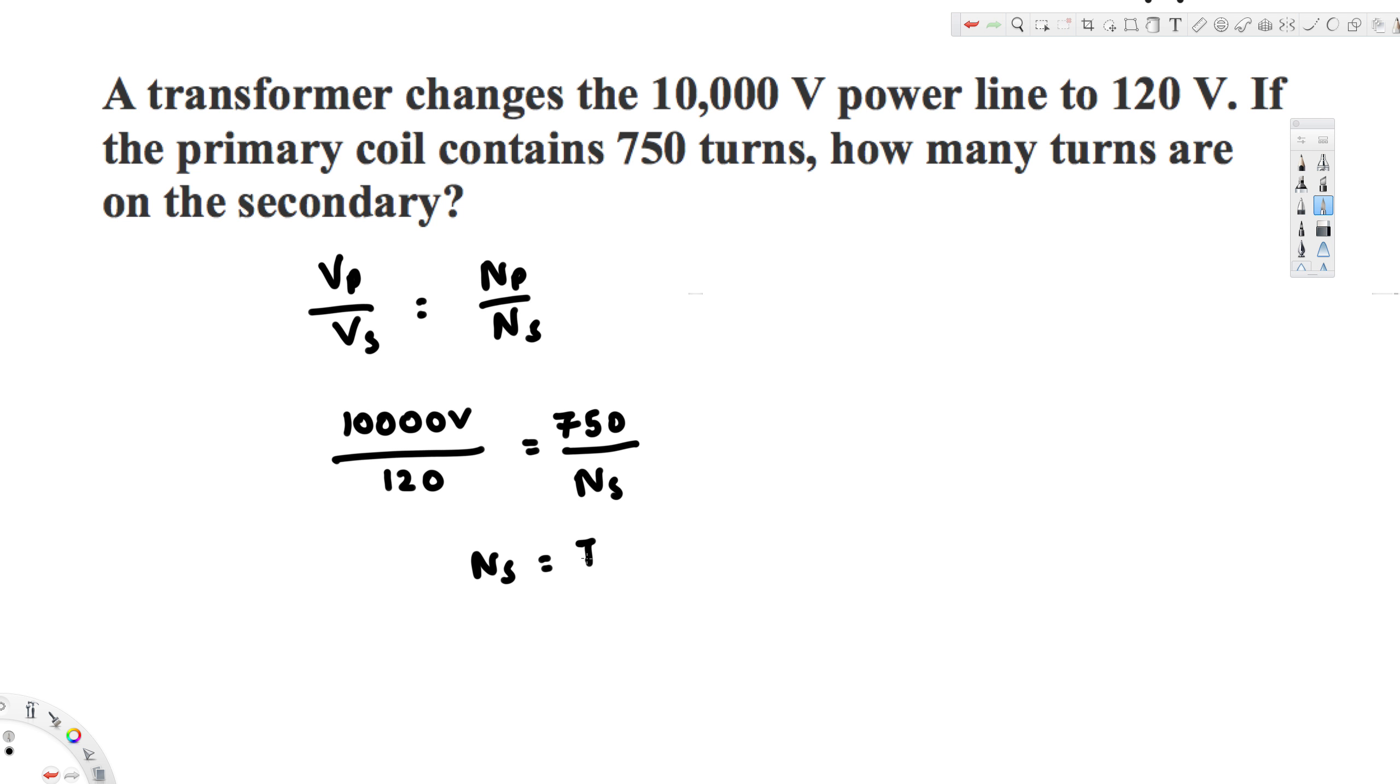Ns is going to be equivalent to 750 times 120 divided by 10,000. And from this one we can cancel these two zeros, so this is going to be 75 times 12 over 100. 75 times 12 is 900.